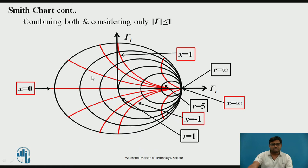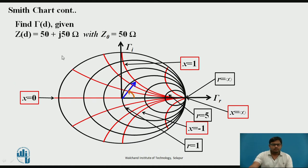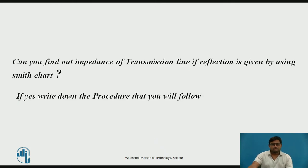When you combine the normalized resistance and normalized reactance circles within the unit circle — since the reflection coefficient cannot be greater than 1 — you get the Smith chart. In the Smith chart, the real axis and imaginary axis of the reflection coefficient are visible; black lines are for constant resistance and red lines are for constant reactance. For a problem with load and characteristic impedance of 50 ohms, the blue line indicates magnitude and the orange line indicates phase. Normalized to r = 1 and x = 1, the point of intersection between the black circle (r = 1) and red circle (x = 1) gives the solution.